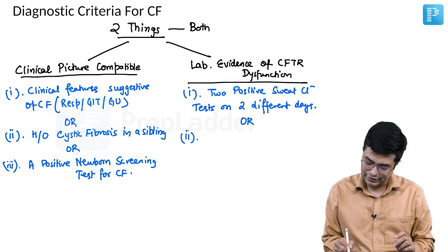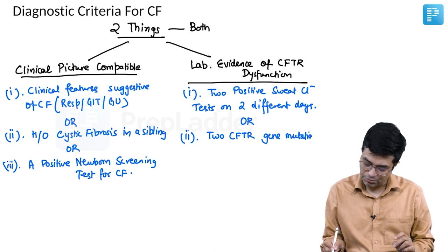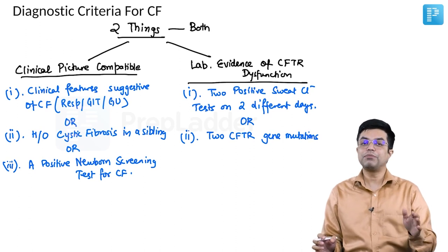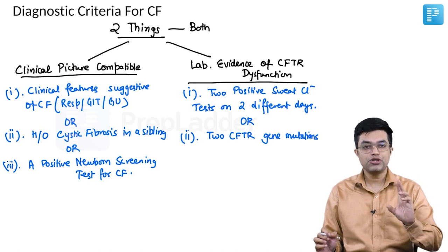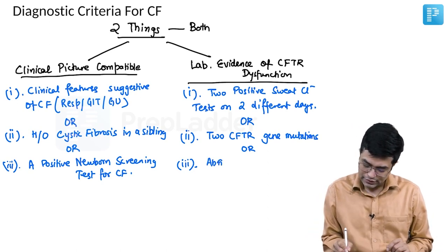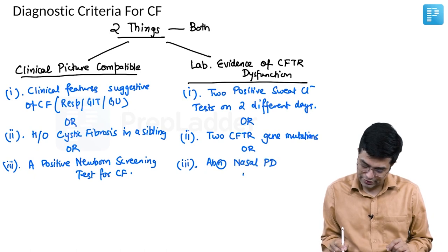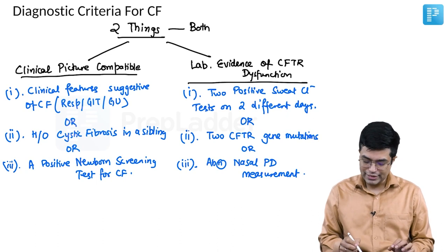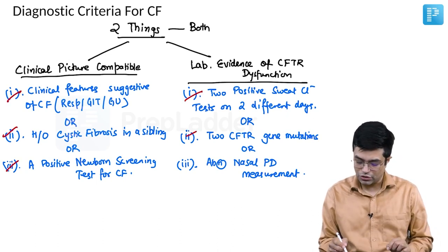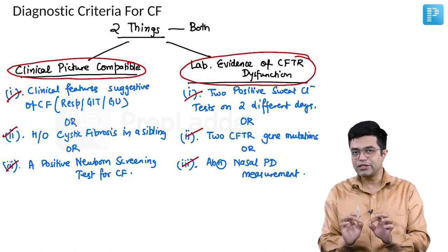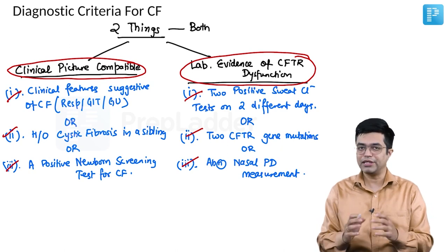Alternatively, two CFTR gene mutations — which have been shown to be associated with Cystic Fibrosis as per the database — can fulfill the lab criteria. A single mutation may or may not be associated with CF, and many mutations are phenotypically silent. Or, an abnormal nasal potential difference measurement — even a single abnormal value — is suggestive of CFTR dysfunction. Any one of these three lab criteria, combined with any one of the three clinical criteria, allows you to make the diagnosis of Cystic Fibrosis.